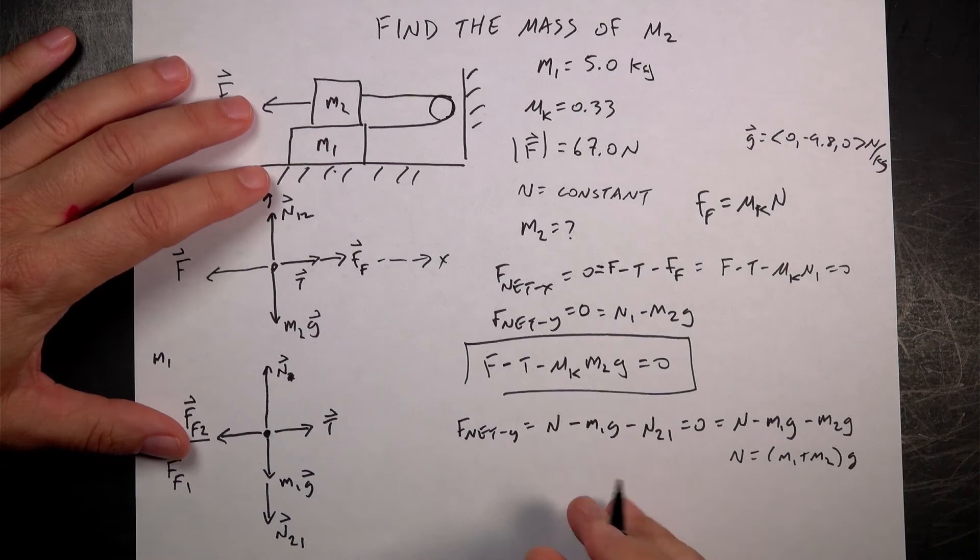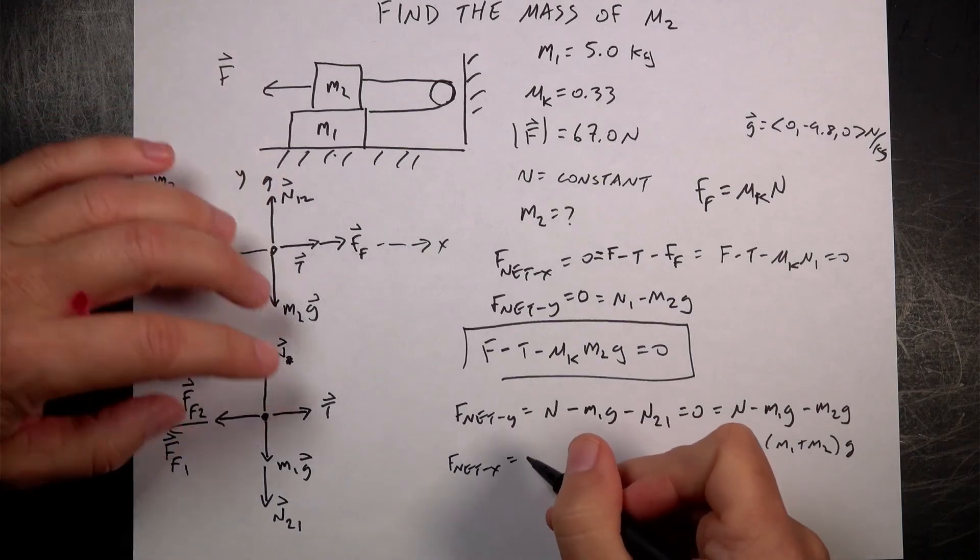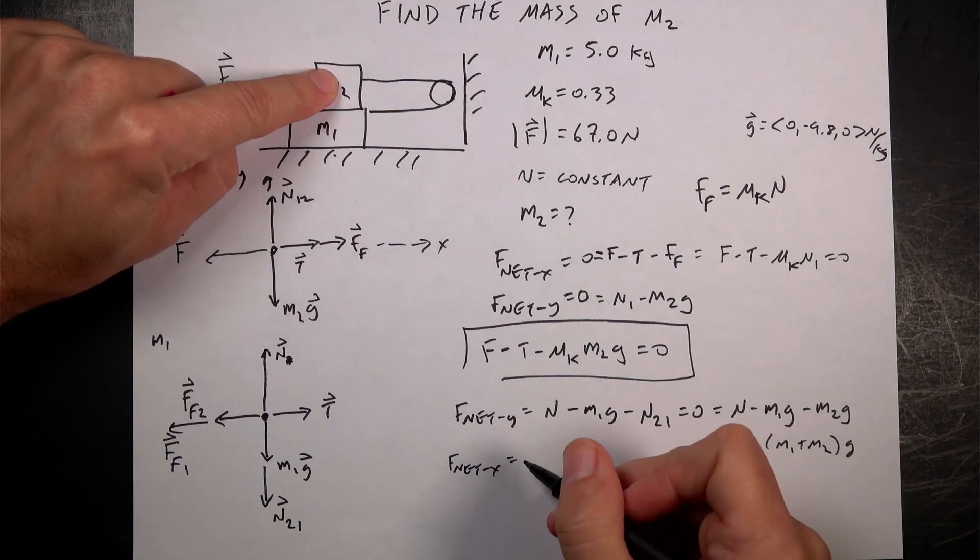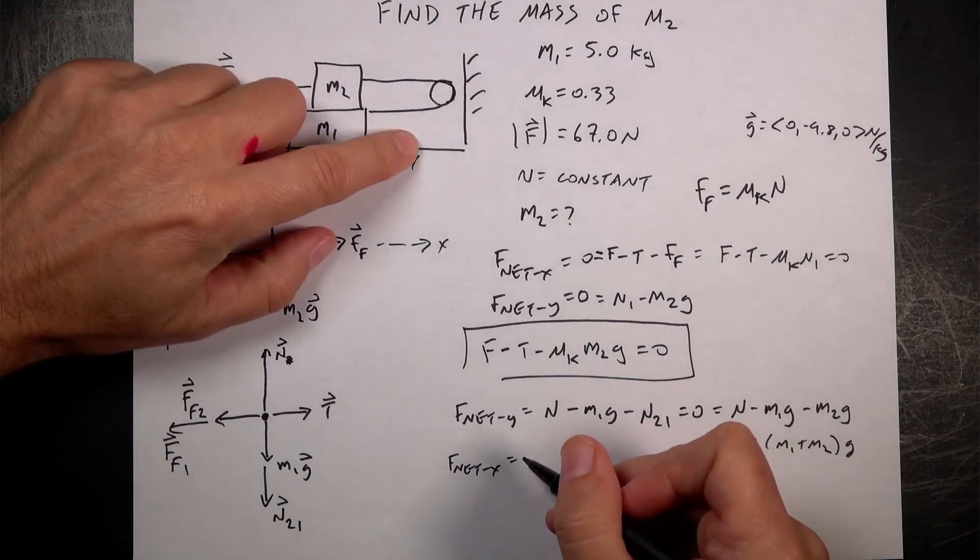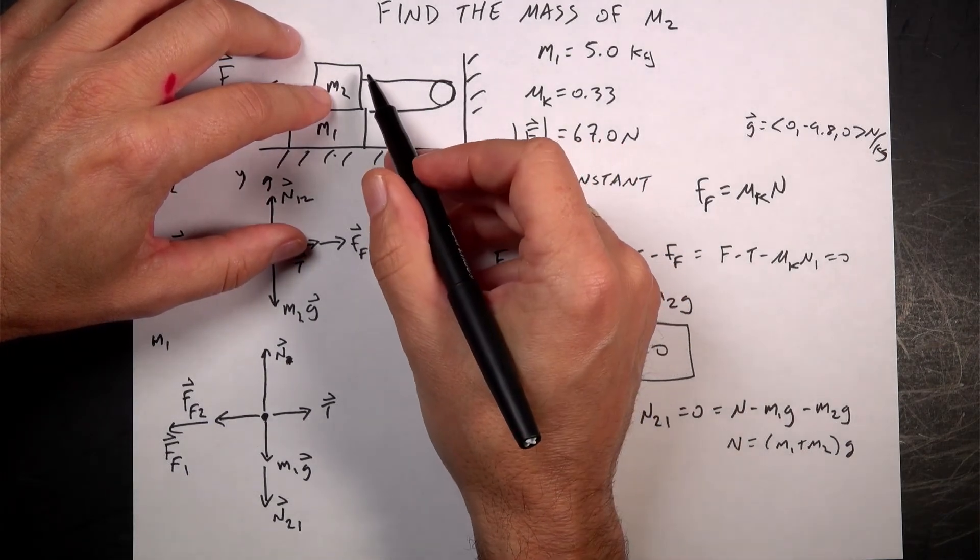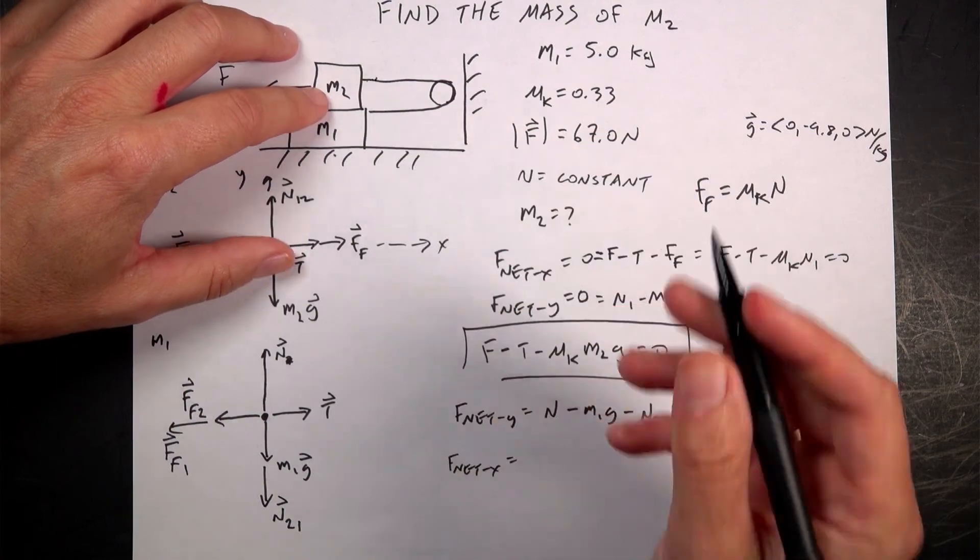Now let's look at the X direction. So F net X. The forces have to add up to zero because it's moving at a constant speed. And if this is moving at a constant speed, that has to move at a constant speed. The other thing I didn't mention, if this is a massless string, the tension, the magnitude of the tension pulling on this side has to be the same as that side.